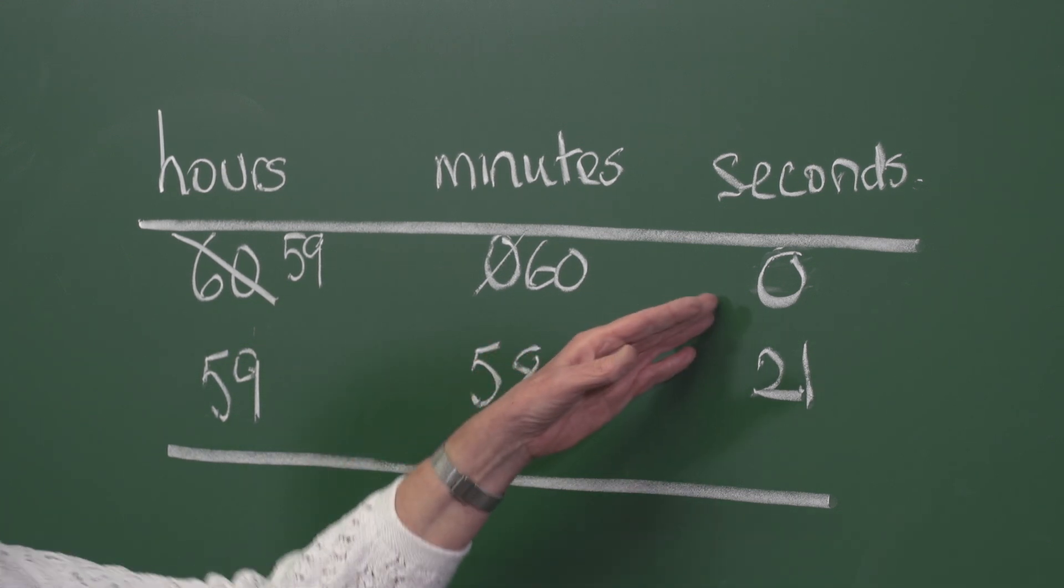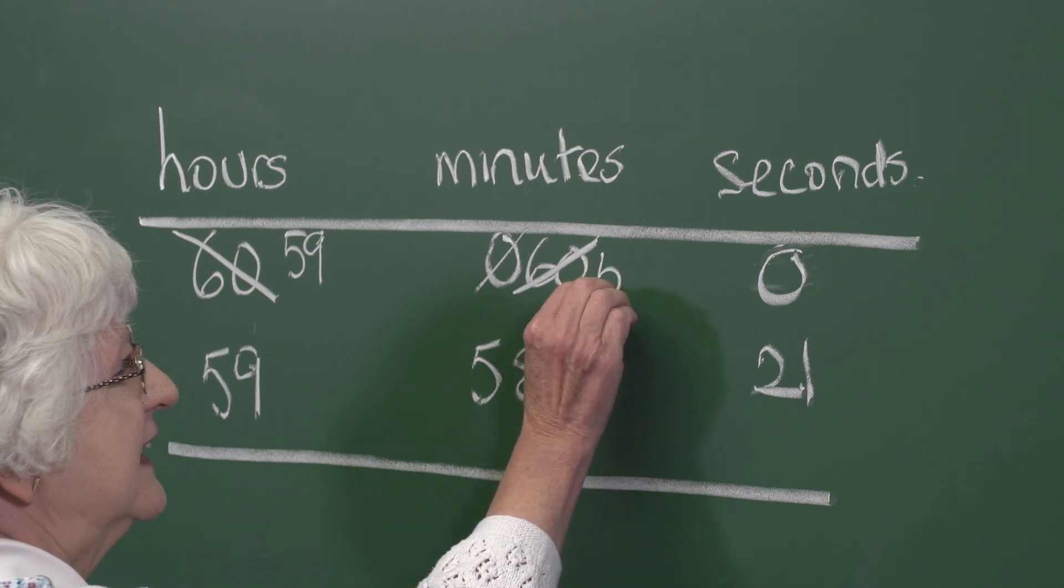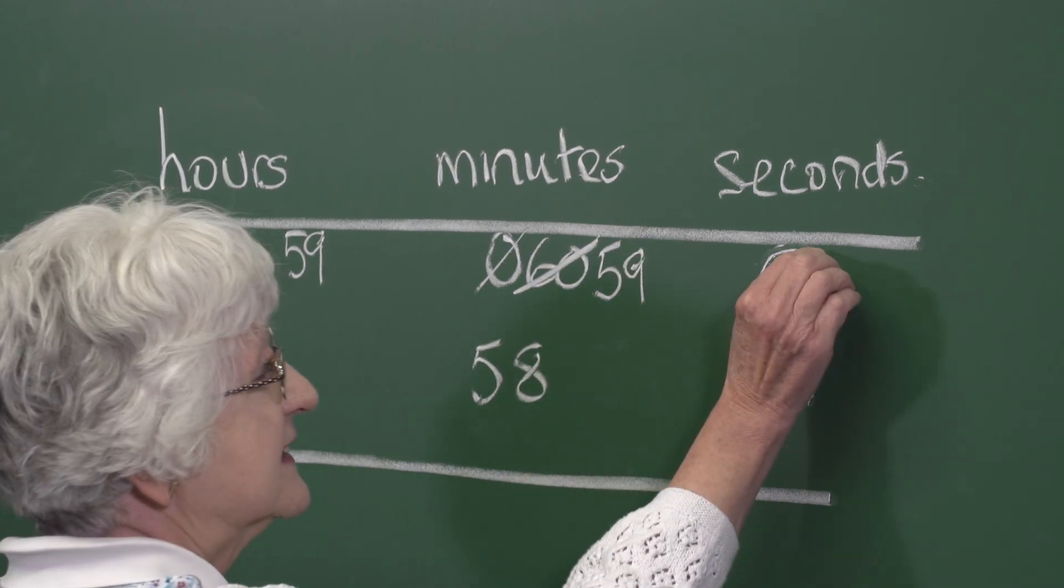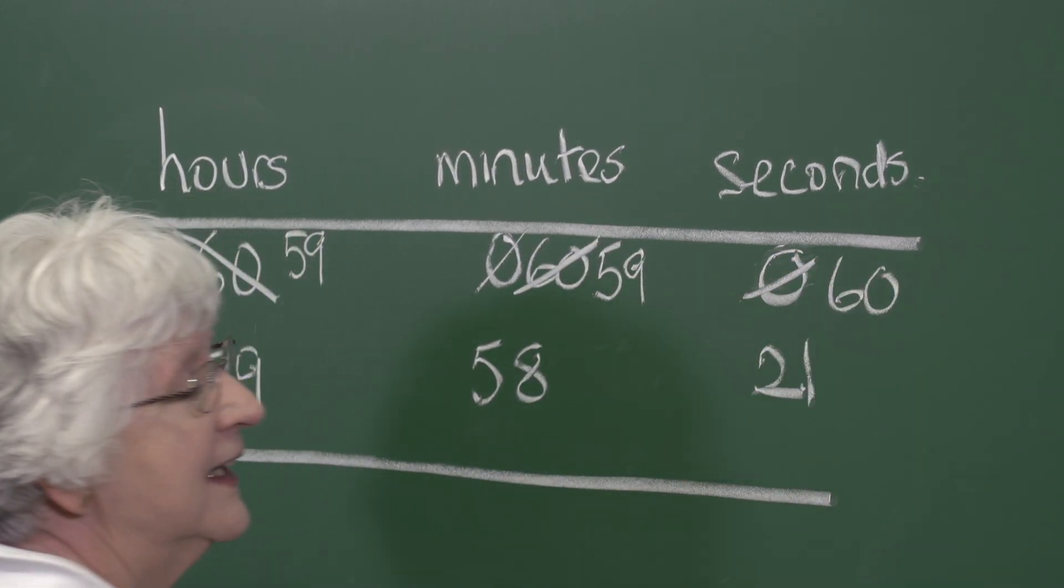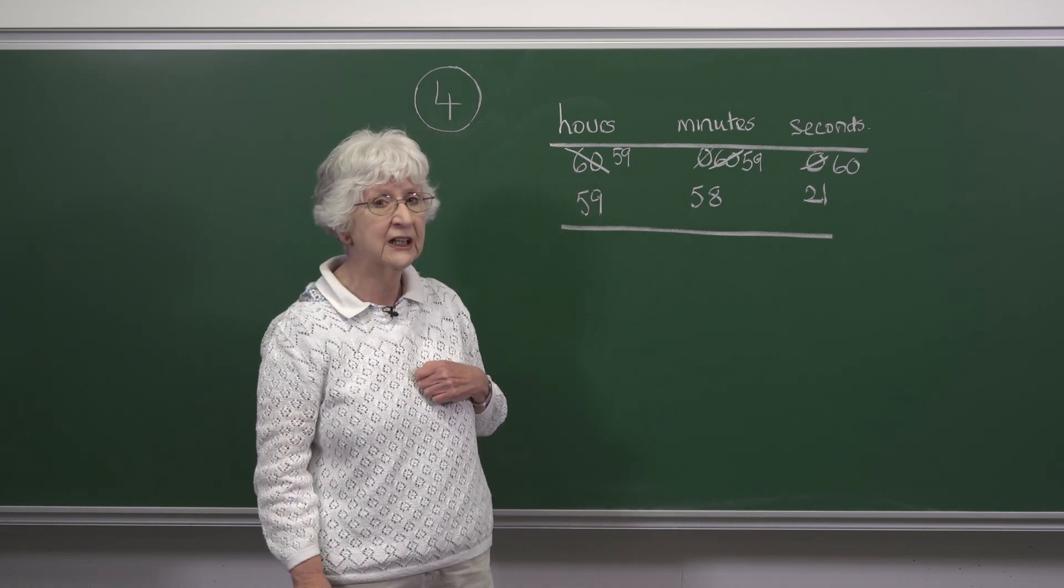And so now we can indeed borrow. We can change that 60 minutes into 59 minutes and 60 seconds. And now we have set out our sum so that we can actually do the subtraction.